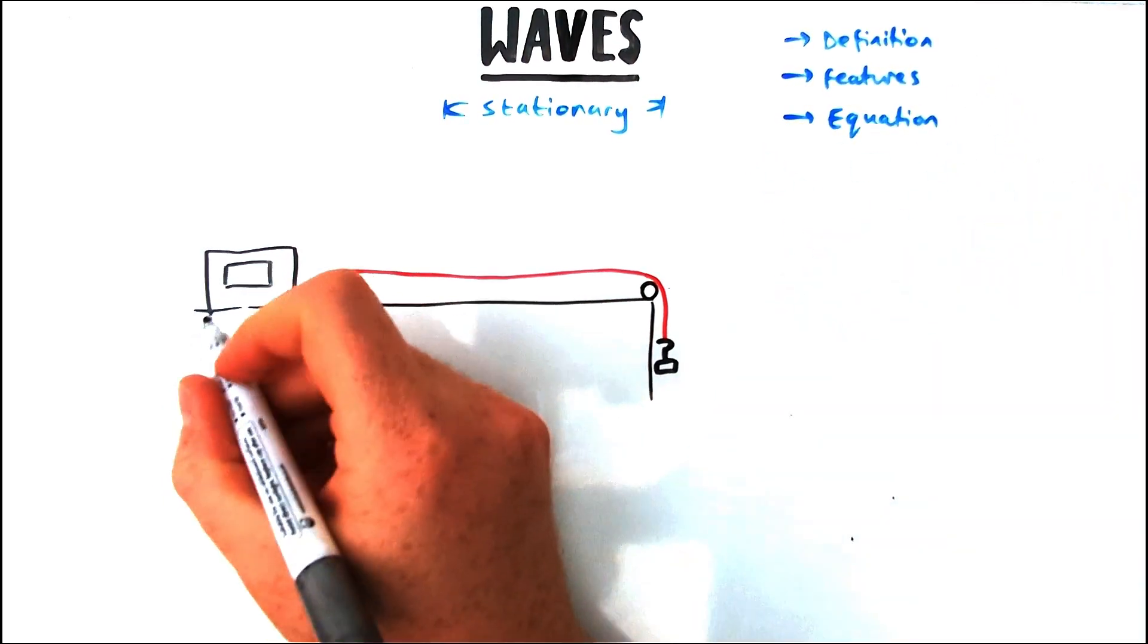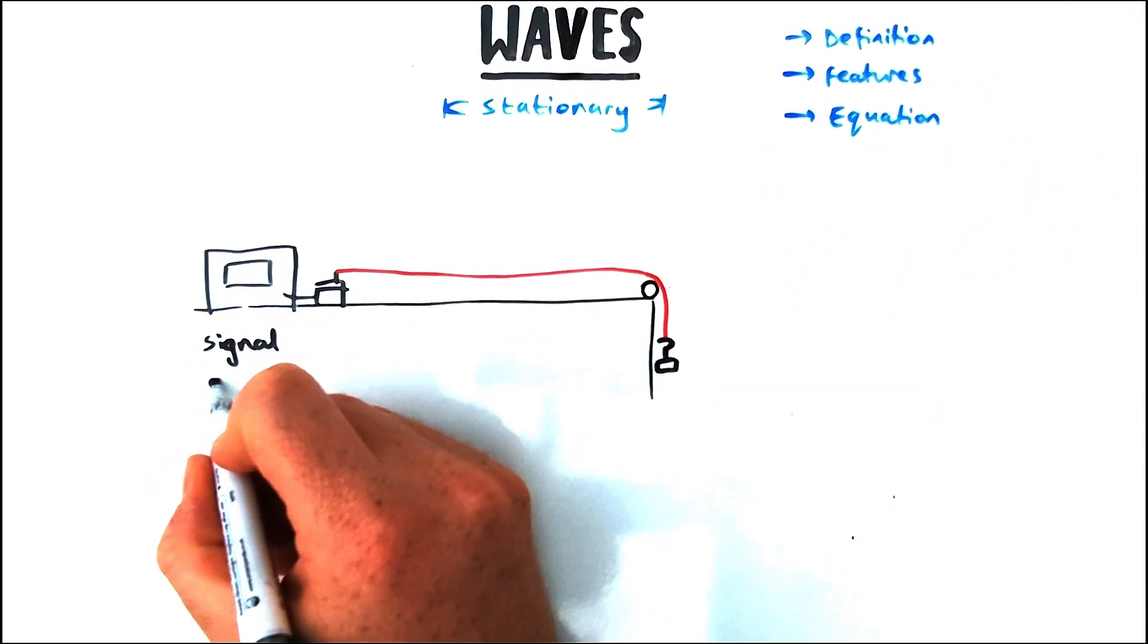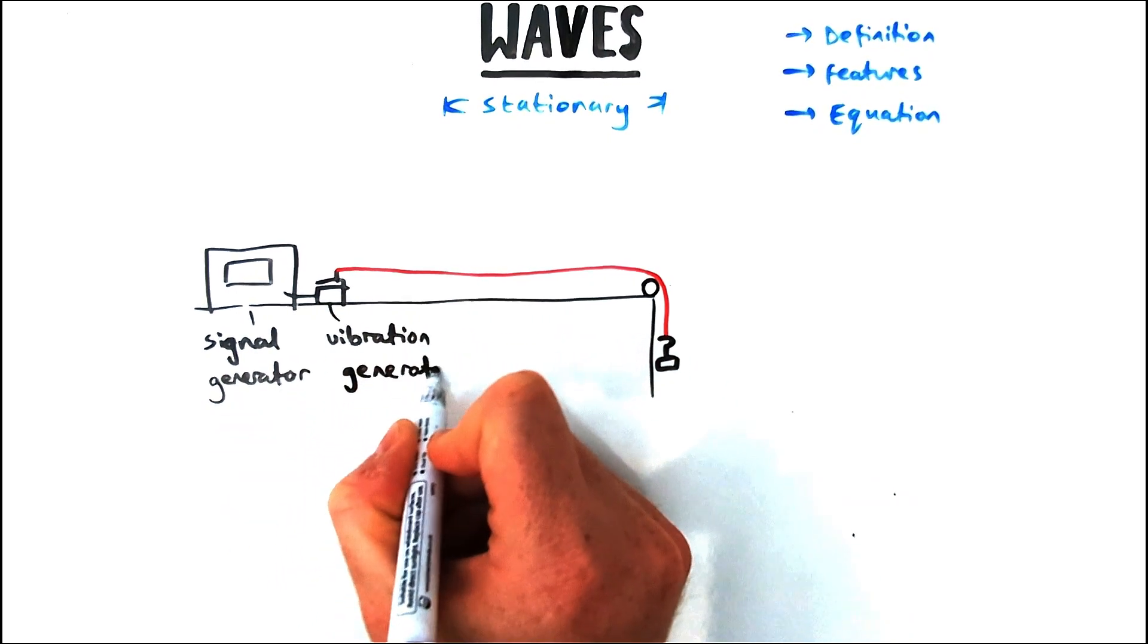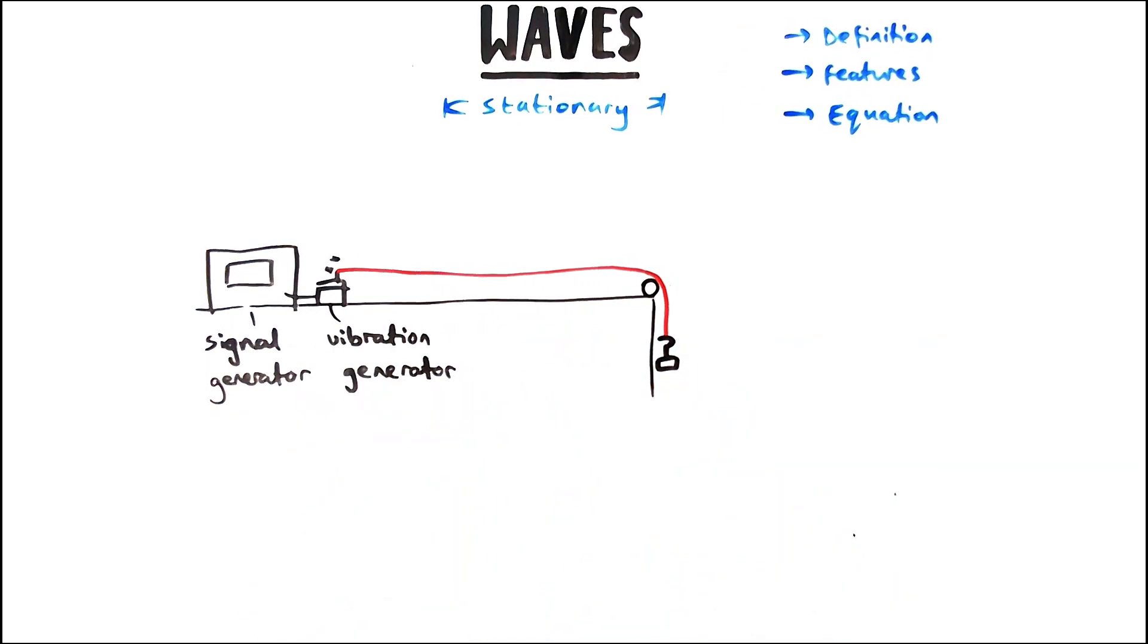As the name suggests, stationary waves are in fact stationary. The energy is localized into one location. But how are they formed? In this video we're going to look at definitions behind stationary waves, how you can identify different features, and the equations as well.